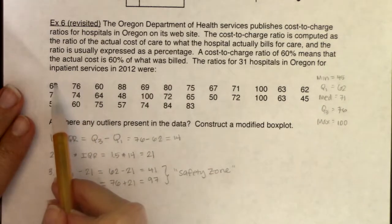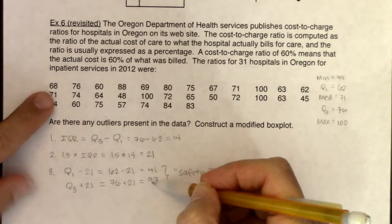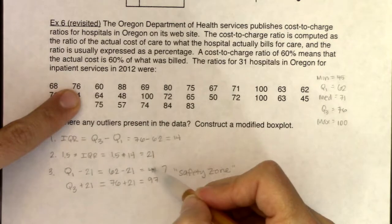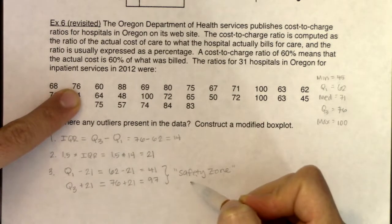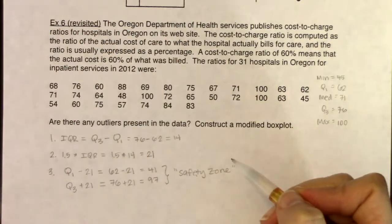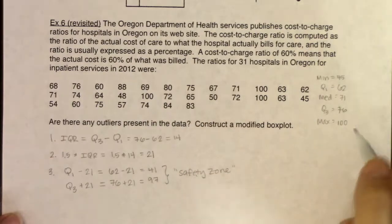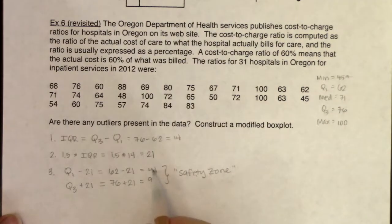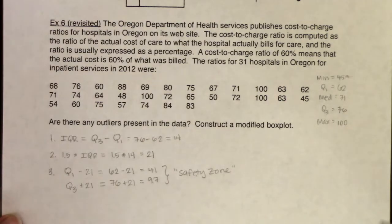Let's go through this. Is 68 between 41 and 97? Yes — not an outlier. Is 76 in the safety zone? Yes, it's safe. Rather than going through all 31 data points, I like to be efficient and check the min and max. The minimum is 45 — is that safe? Yes, so I know there are no outliers on the left half of my data.